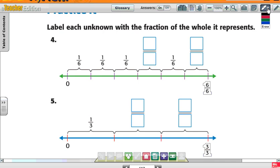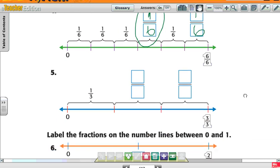So, it says, label each unknown fraction, each unknown with a fraction of the whole it represents. So, look, I have one-sixth, one-sixth, one-sixth. So, what goes in here? One-sixth. One-sixth. And then I have one-sixth, then what goes here? One-sixth. Same thing, one-sixth.